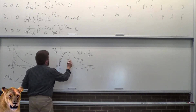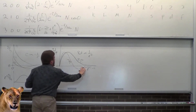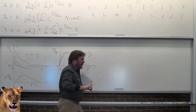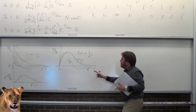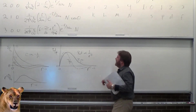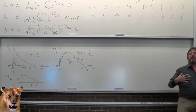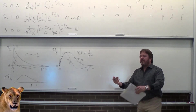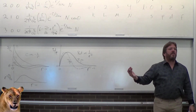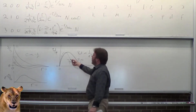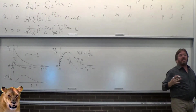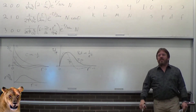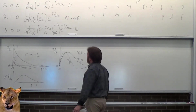A 3p state looks similar but has one node — it still starts at zero at r equals zero, but then has a node, so it's the second p state rather than the first. This is all basically the same stuff you learned in high school and freshman chemistry — it just now comes in equation form, with some nuances.